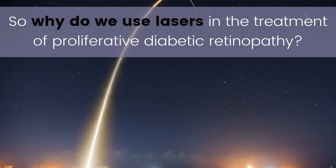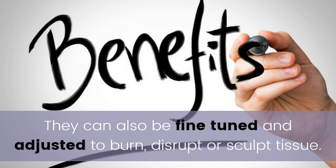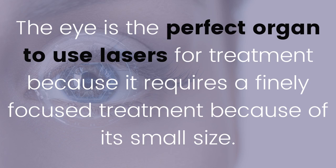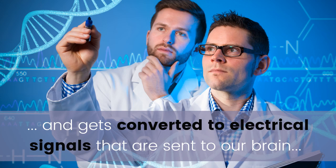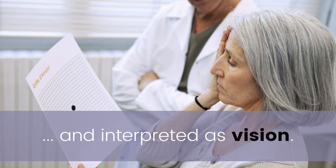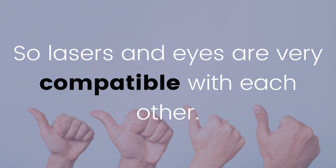So why do we use lasers in the treatment of proliferative diabetic retinopathy? Lasers have the unique ability to target tissue specifically depending on the color of their wavelength. They can also be fine-tuned and adjusted to burn, disrupt, or sculpt tissue. The eye is the perfect organ to use lasers for treatment because of its small size and its open window to the external world — how light enters our eye and gets converted to electrical signals interpreted as vision. Laser energy is taken up by the melanin present in the retinal nourishing layer, so lasers and eyes are very compatible with each other.